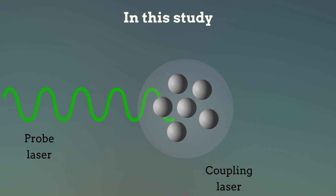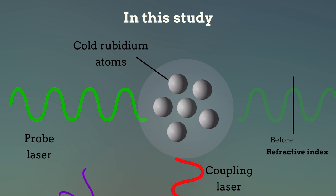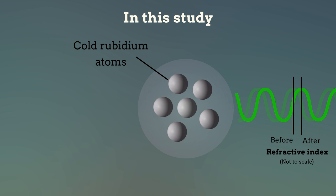In this study, researchers induced EIT in cold rubidium atoms and then used pulses of a third laser, called the signal laser, to alter the probe laser beam. The effect on the probe beam was registered as a change in its refractive index, or a cross-phase shift, as it passed through the rubidium atoms.